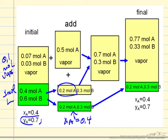Overall now, I have still the same composition of the vapor. This vapor plus the starting vapor means I have 0.77 moles of A and 0.33 moles of B. I've maintained the vapor composition. I've maintained the liquid composition even though I added only one component.